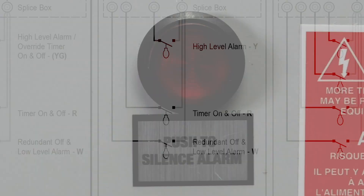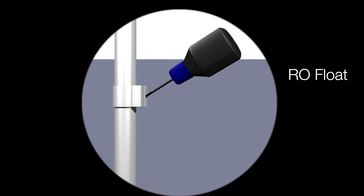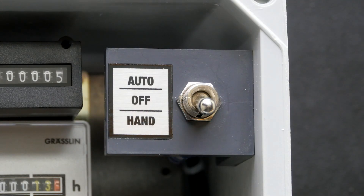If no redundant off float is present, the pump will continue to run until the tank is empty. Please note that if the control panel is equipped with a redundant off, or RO float, the panel must verify that the float is in the up position before the pump will engage, even in the manual mode.